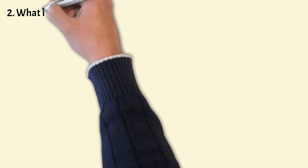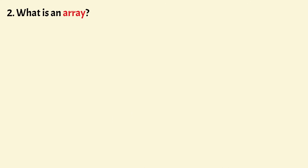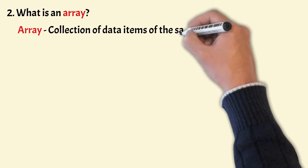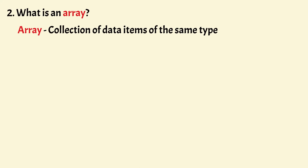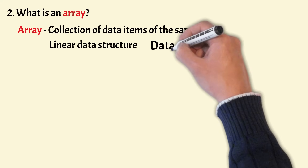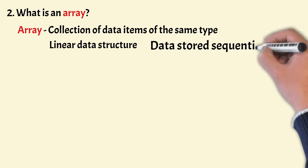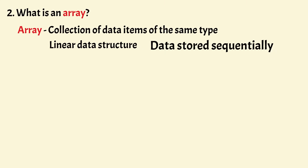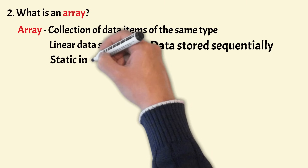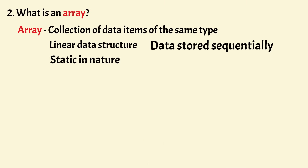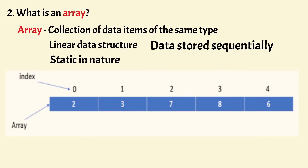What is an array? An array is a collection of data items that are of the same type. It is a linear data structure and its data items are stored sequentially in the memory. Arrays are also static in nature since they are always fixed in size. Let's have an example: there is an array of size 5 that stores integer numbers only.